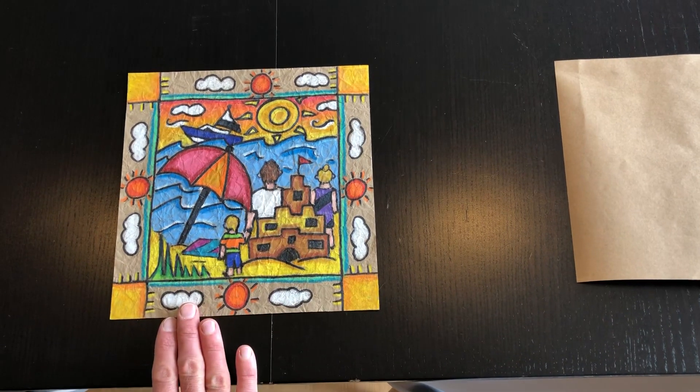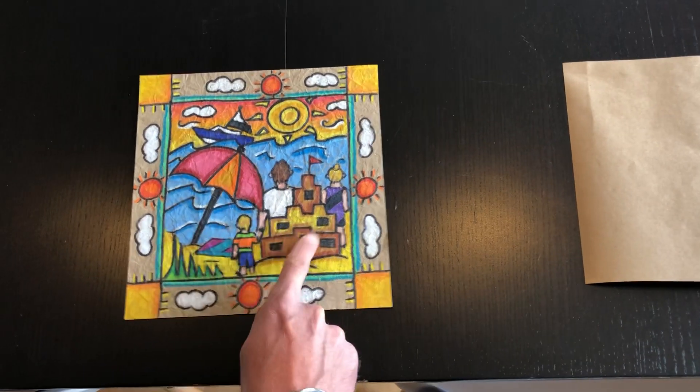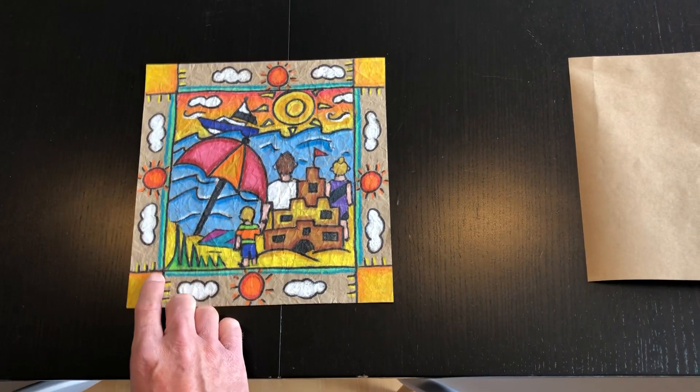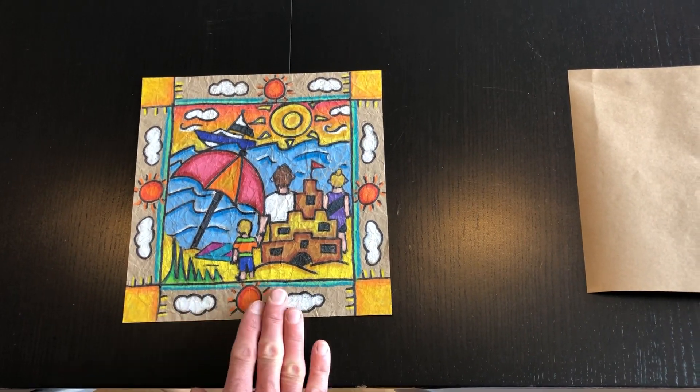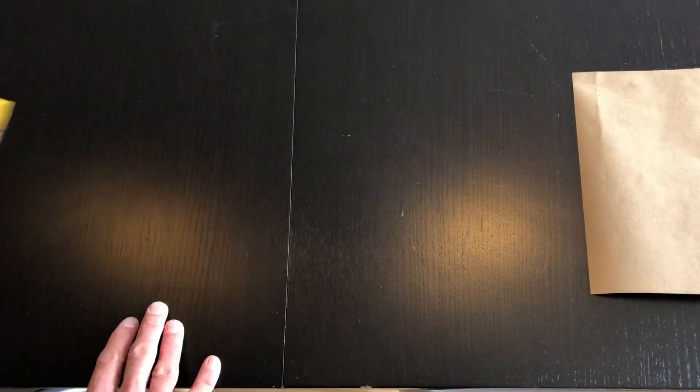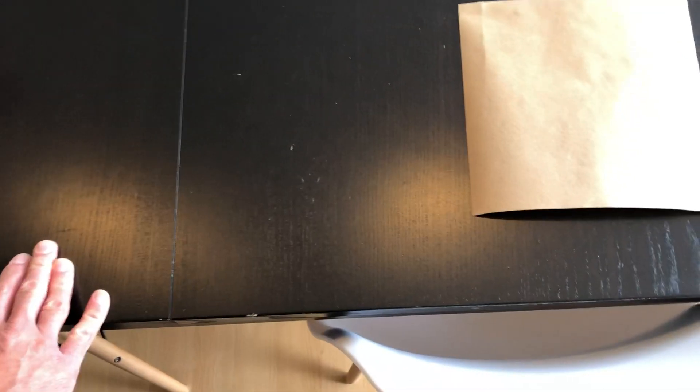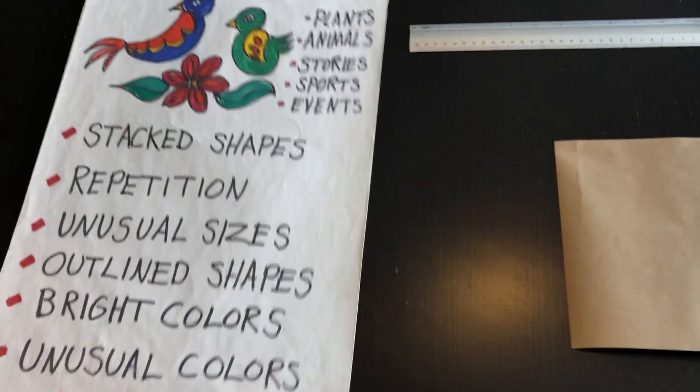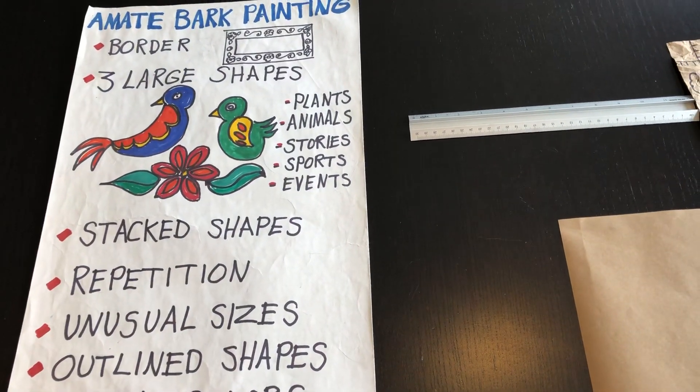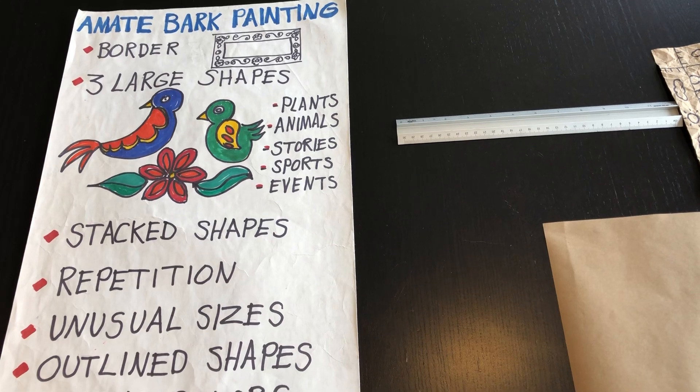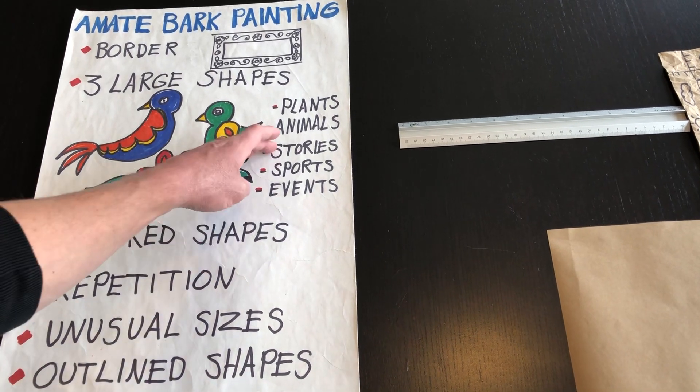This is the one that I'm going to draw today. My three large shapes here are this umbrella, the sandcastle, and the sailboat. Then I'm going to stack shapes in between. So think about something that you like to do to tell a story about you. In the examples I'm going to put on this lesson are plants and animals. You're going to see those in Amate bark examples if you look those up online, but they tell stories.